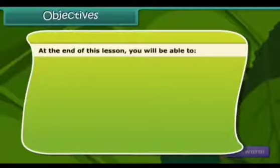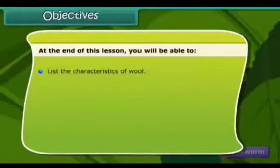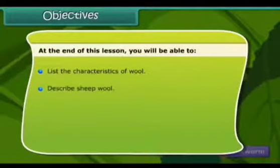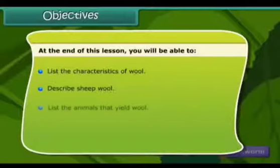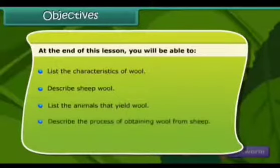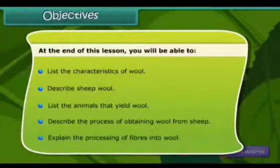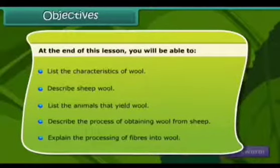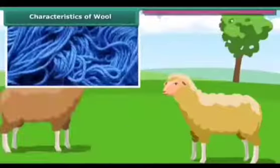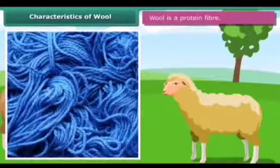The objectives: at the end of this lesson you will be able to list the characteristics of wool, describe sheep wool, list the animals that yield wool, describe the process of obtaining wool from sheep, and explain the processing of fibers into wool.